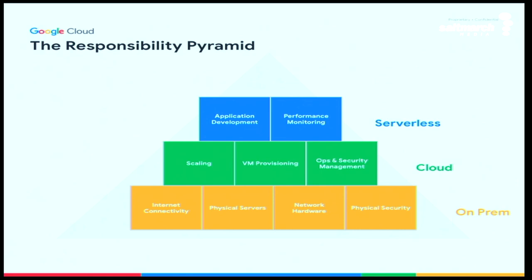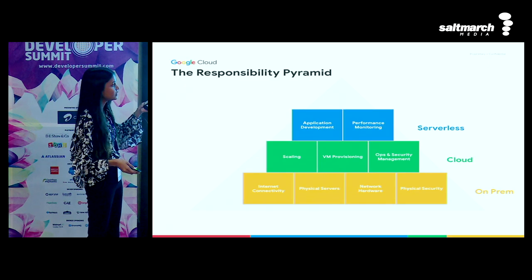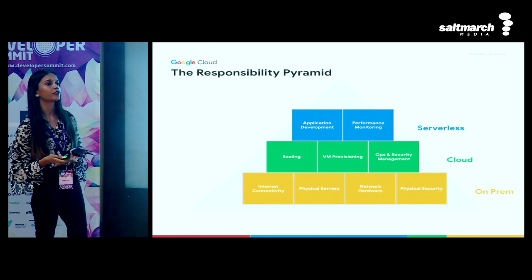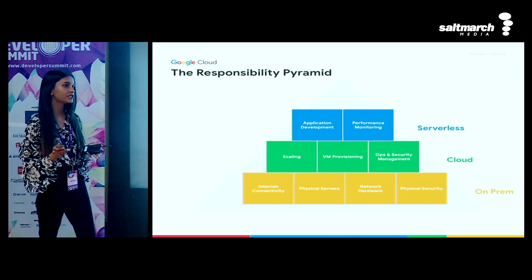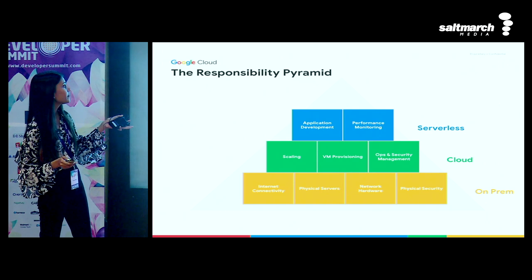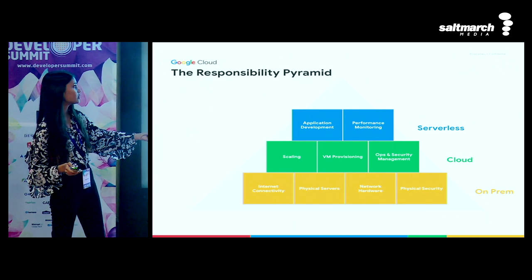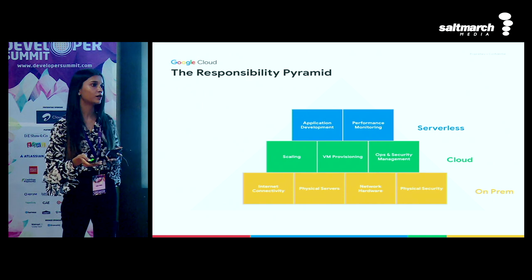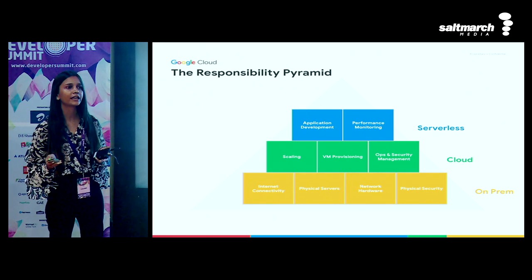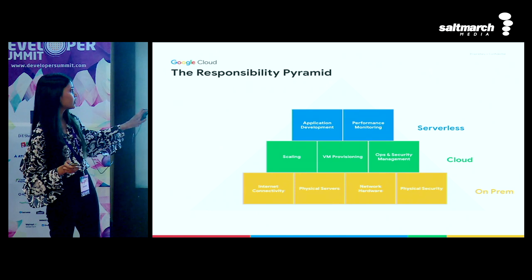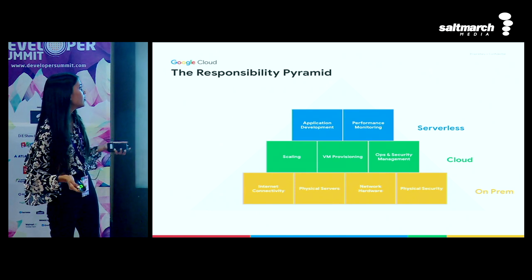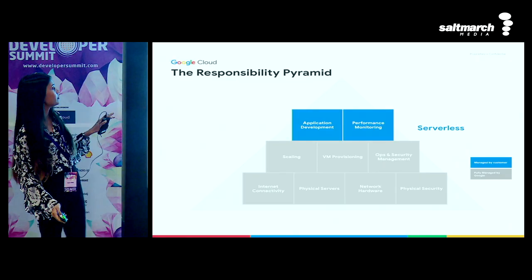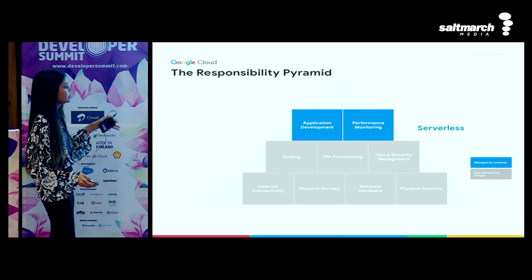This is called the responsibility pyramid. Whatever is on your level and on top of it is your responsibility. On-prem, internet connectivity, procuring hardware, maintaining that hardware, the security, and the physical security of that hardware is your responsibility. As you move up to cloud, you give these responsibilities to the cloud provider and you are responsible for patching your own infrastructure that you've provisioned from cloud. You have to take care of your own ops - that's the responsibility shift when you've moved from on-prem to cloud.